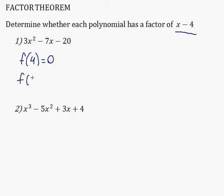Let's figure out what f(4) is for this polynomial. All I need to do is plug in the 4 for each x: 3 times 4 squared minus 7 times 4 minus 20.